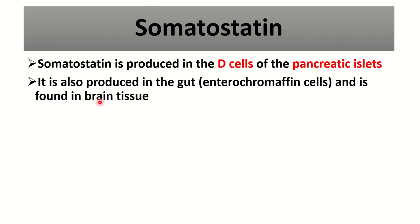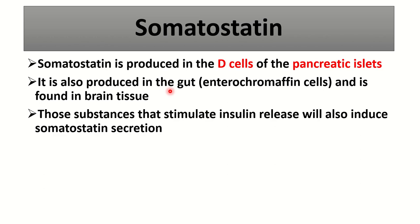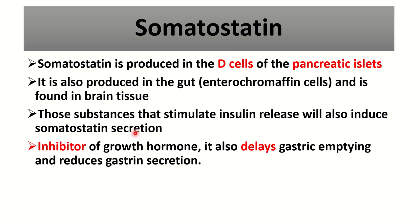Somatostatin is also produced in the gut — from the enterochromaffin-like cells — and in the brain tissue. Those substances that stimulate insulin release also induce somatostatin secretion.